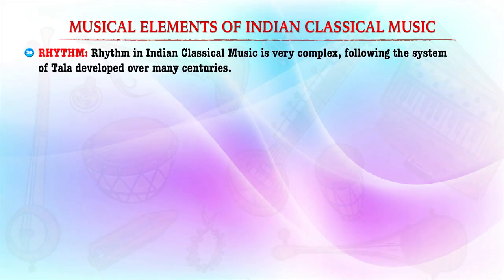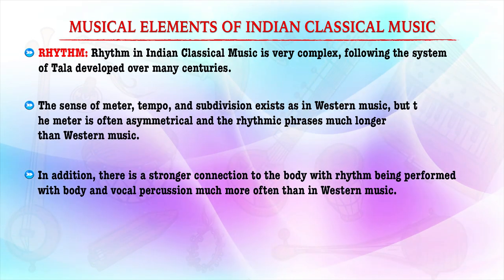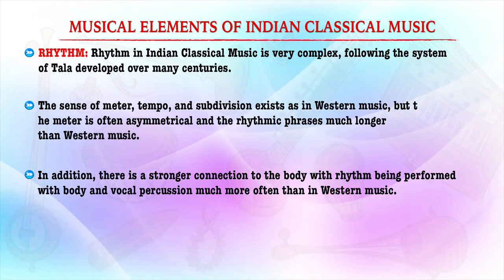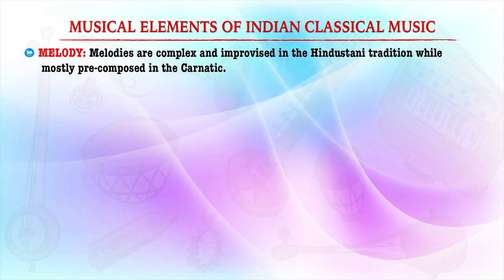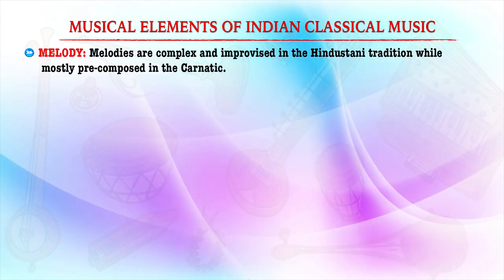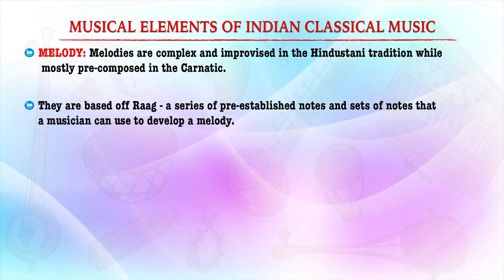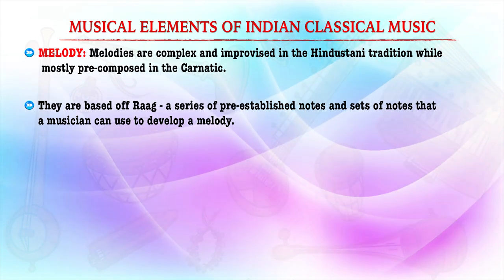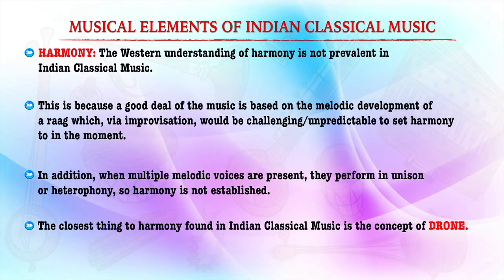So learners, in this video we have tried to understand that the elements of Indian classical music are very different from Western music. The rhythm in Indian classical music is very complex and is based on the system of tal. There are various sub-divisions, and it is different from Western music, which is more strongly connected with known patterns. In terms of melodies, melodies are complex and are improvised in the Hindustani tradition and pre-composed in the Karnataka tradition. They are based on ragas — a series of pre-established notes — and melodies are usually much longer than Western classical melodies.